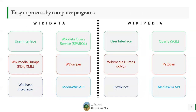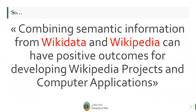So Wikipedia information as well as Wikidata information are easy to process by computer programs using a variety of tools, as you see on the screen here. There is a query service for both of them, Wikidata, Wikimedia tabs, tools, Python libraries, APIs, as well as other methods for processing the information. So combining semantic information from Wikidata and Wikipedia can have positive outcomes for developing Wikipedia projects and computer applications.